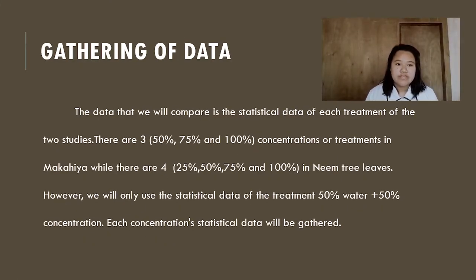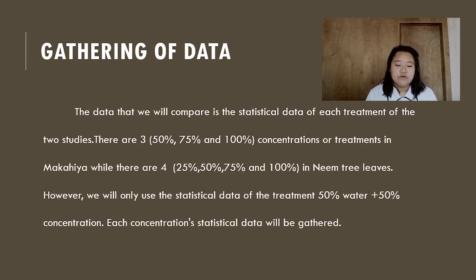Gathering of Data: The data we will compare is the statistical data of each treatment from the two studies. There are three concentrations — 50%, 75%, and 100% — in Makahiya, while there are four — 25%, 50%, 75%, and 100% — in neem tree leaves. However, we will only use the statistical data of the 50% water plus 50% concentration treatment. Each concentration's statistical data will be gathered.